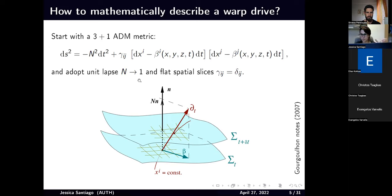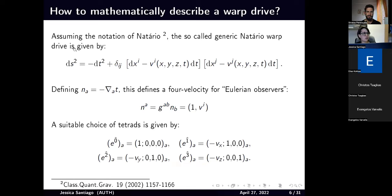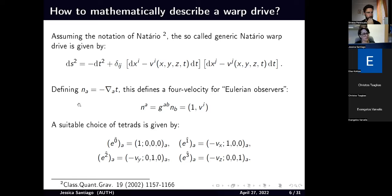For generic warp drive metrics, we're going to adopt unit lapse, N equals one, and flat spatial slices. Using the notation of Natário, we call this the generic warp drive metric. The beta, related to the four-velocity of the warp drive, defines an Eulerian observer — an observer whose four-velocity is orthogonal to each of these time slices. You can calculate the four-acceleration of these observers and see it's zero, so they are geodesic observers.